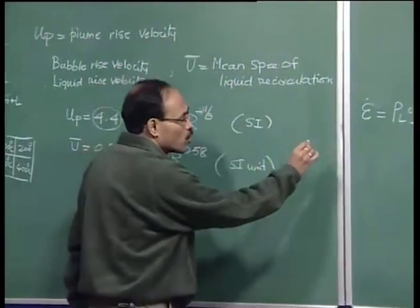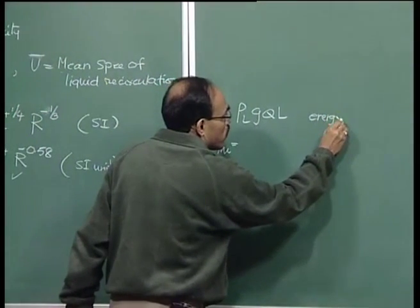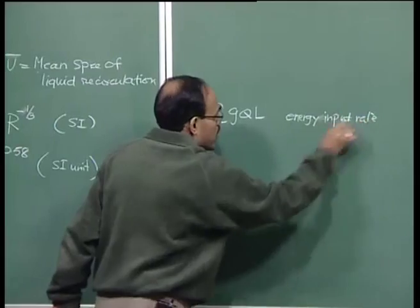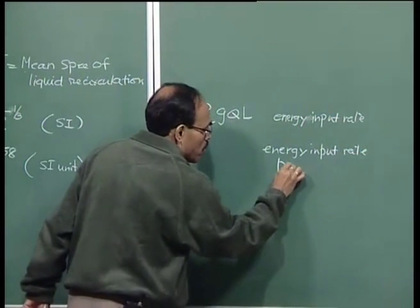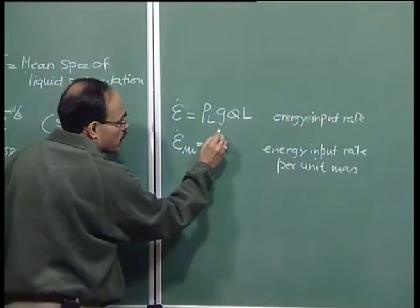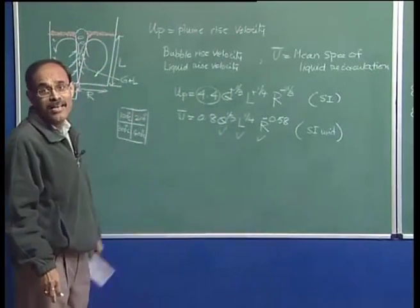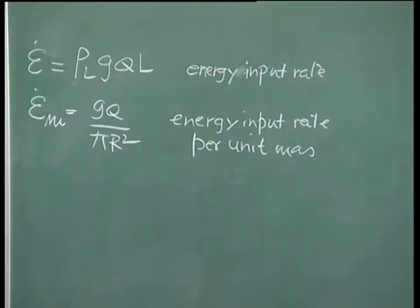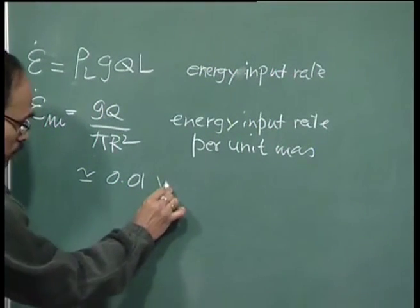Another important term is the energy input rate per unit mass — the specific potential energy input rate. This equals g times Q divided by pi times r-squared, assuming the ladle is a perfect cylinder of volume pi-r-squared-L. The rho-L terms cancel, as do the L terms, leaving g times Q divided by pi-r-squared. Under ladle metallurgy steelmaking conditions, this value is basically of the order of 0.1 watts per kilogram.